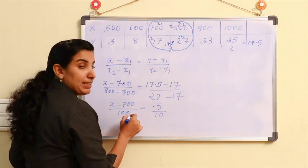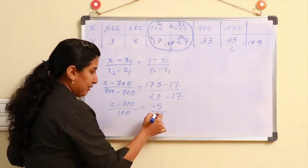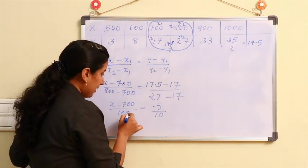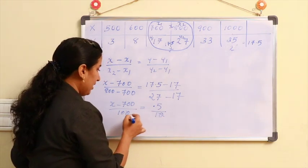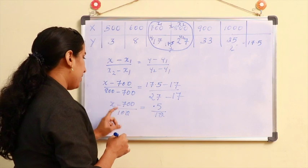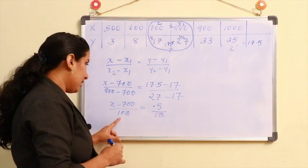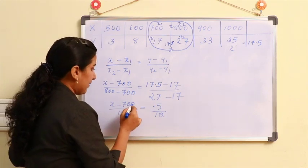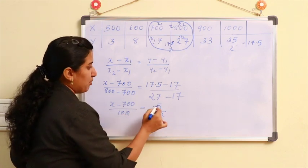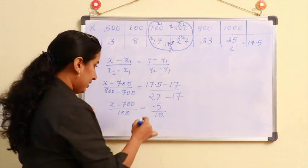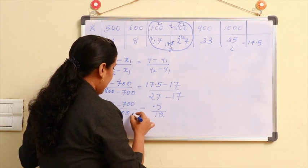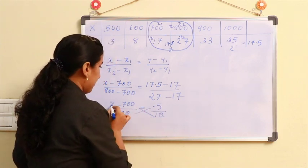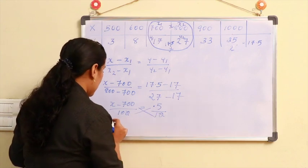The 10 cancels out, leaving x minus 700 divided by 100 is equal to 0.5. Therefore x minus 700 is equal to 0.5 into 100, which gives 0.5 into x minus 700.